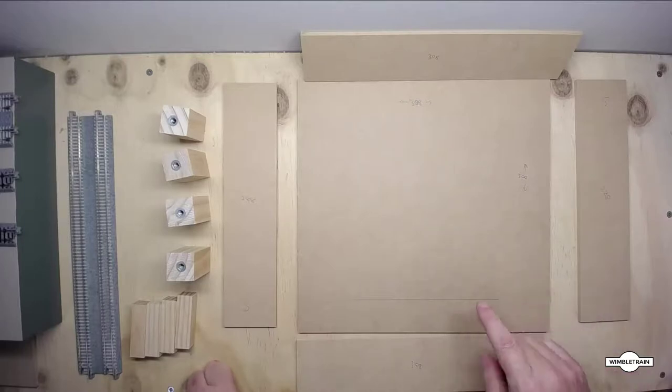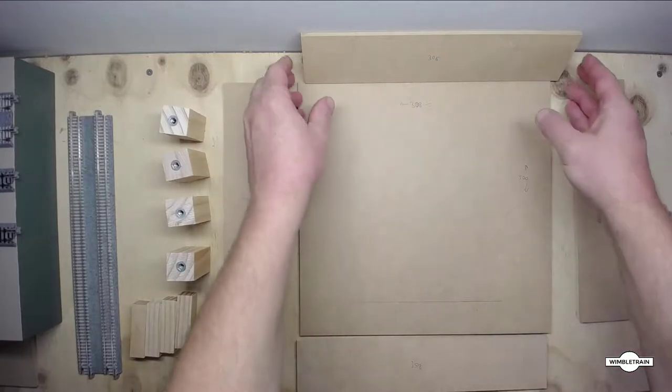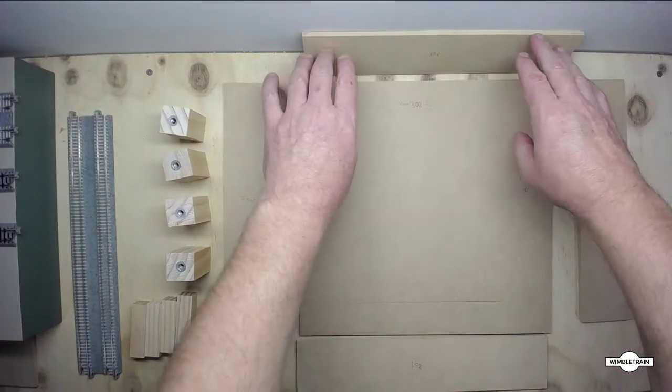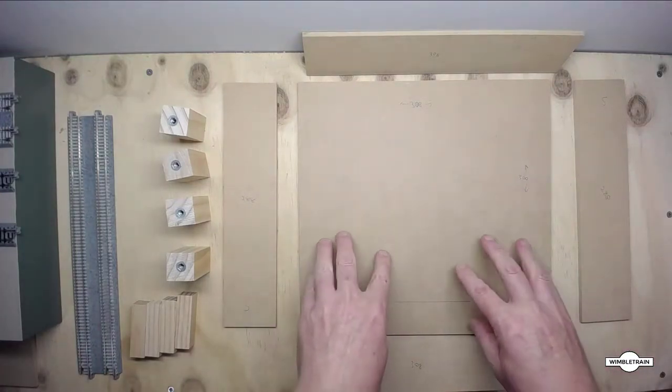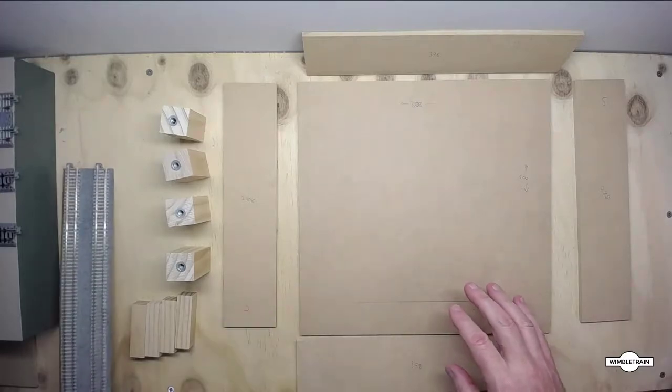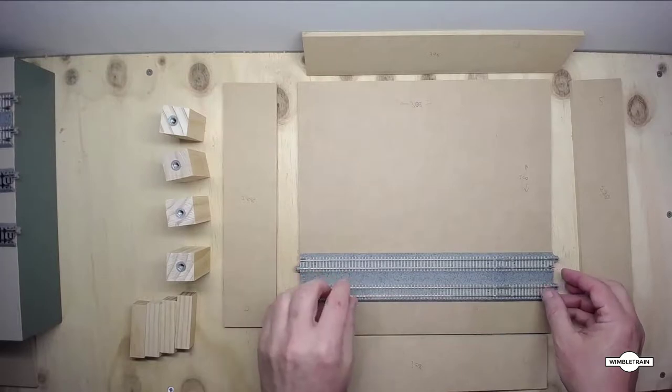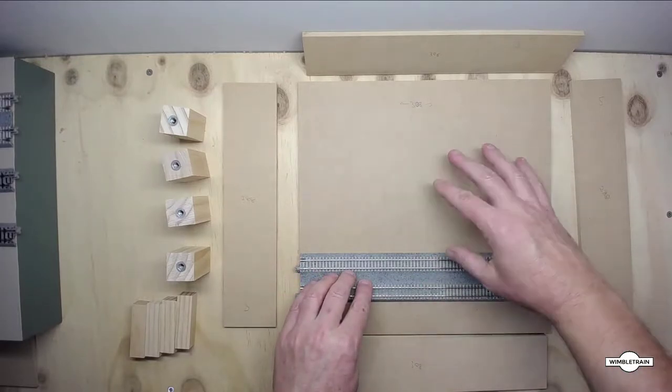Basically what we've got here in front of us is the four sides. So there's the back, the front and the two side pieces and the top. When it's finished the T-Trek will run like this across there. This will be the front of our module and that's the back.